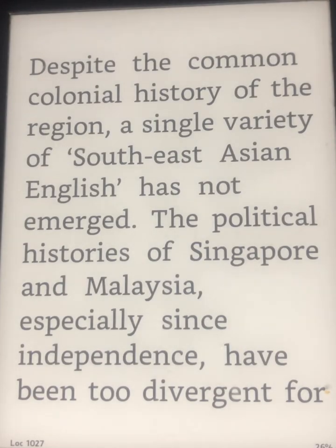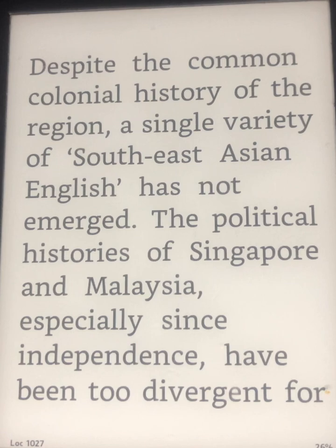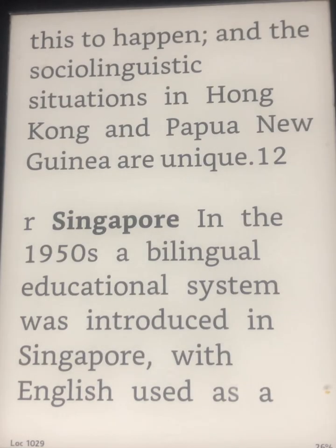Despite the common colonial history of the region, a single variety of Southeast Asian English has not emerged. The political histories of Singapore and Malaysia, especially since independence, have been too divergent for that to happen, and the sociolinguistic situations in Hong Kong and Papua New Guinea are unique.